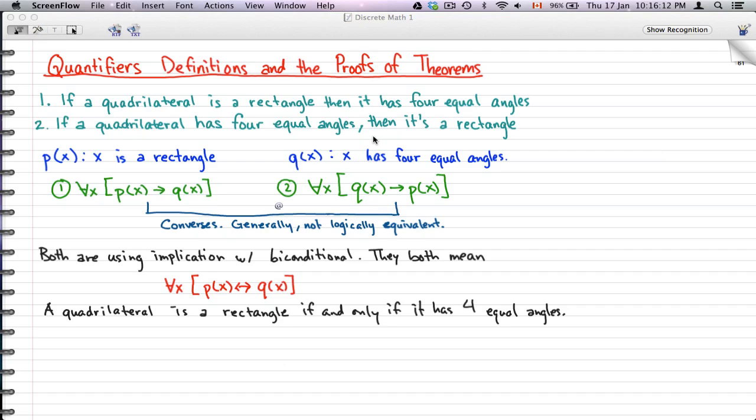So quantifiers and proof of theorems. Now we have two statements here. The first statement is, if a quadrilateral is a rectangle, then it has four equal angles. Second statement is, if a quadrilateral has four equal angles, then it's a rectangle. Now px represents x is a rectangle and qx represents x has four equal angles.